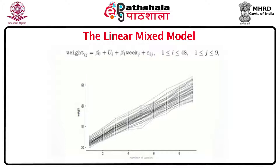We could have stopped here but not making any further assumptions about β0i would lead to a very large number of parameters — in this case 48 parameters — and hence poor inference. To reduce the number of parameters, we further make the assumption that the u_i are normally distributed independently of the ε_ij.